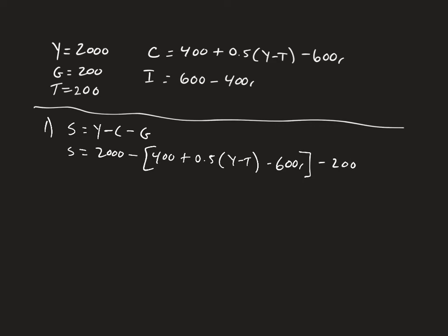We can go ahead and actually erase this Y minus T in here. What is Y minus T? It's 1,800. So we can add that in right away. So now we have savings as a function of r. Now let's just go ahead and clean this up a little bit. 2,000 minus, we've got 400 minus 900 plus 600r. I'm getting that by distributing this negative sign through everything and minus 200. Let's get all of our like terms together.